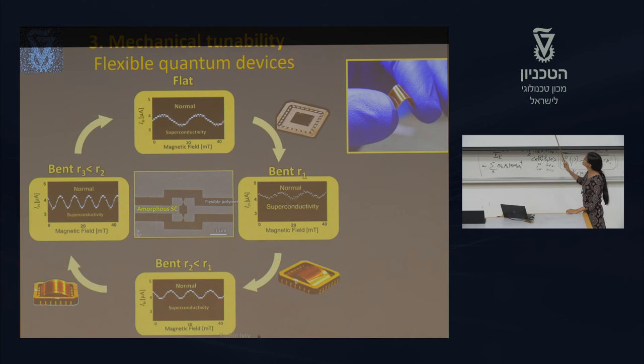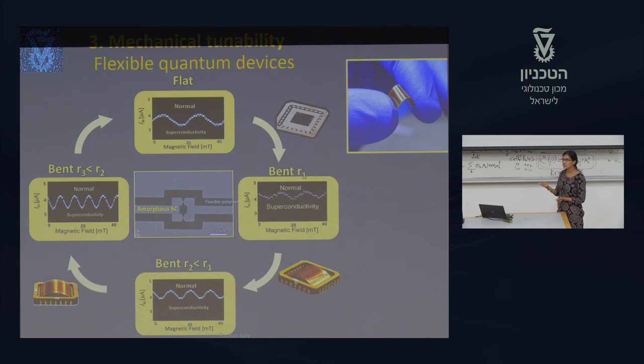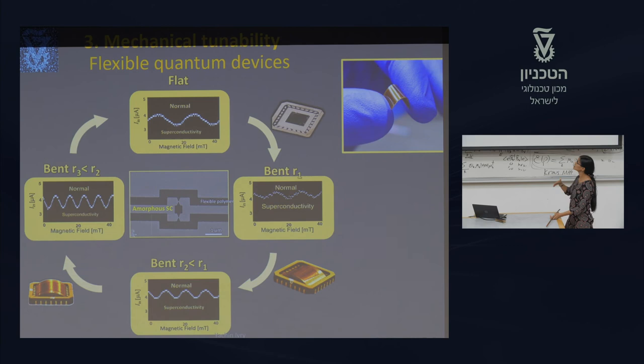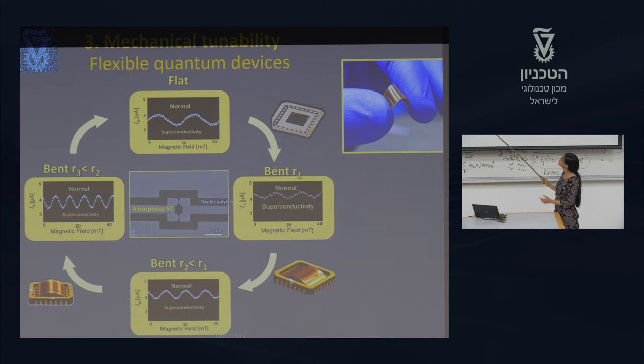We fabricate the SQUID on a flexible substrate like Kapton. First, in the flat state, the device works and shows a sine wave function. Then we bend the material to change the radius of curvature — from R1 to R2 to R3 — and we observe a change in the periodicity, demonstrating that we can tune quantum devices by mechanical means.